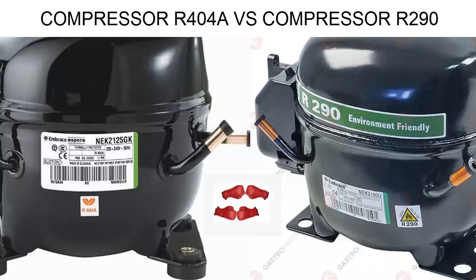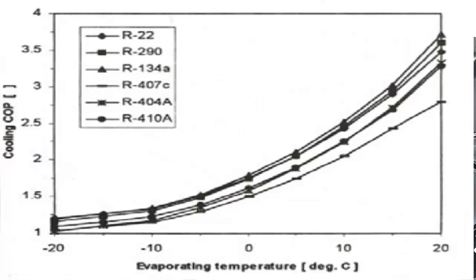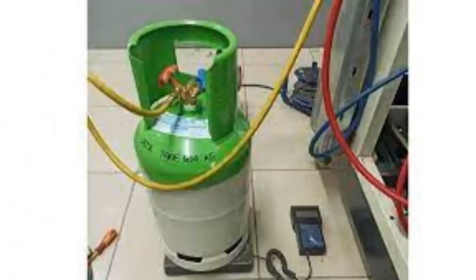The compressor system using R290 gas is more efficient in terms of energy consumption compared to R404A, for the same cooling capacity. The amount of R404A refrigerant needed in grams to achieve the same cooling effect as R290 is higher.